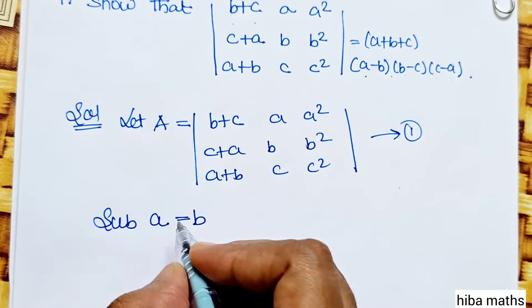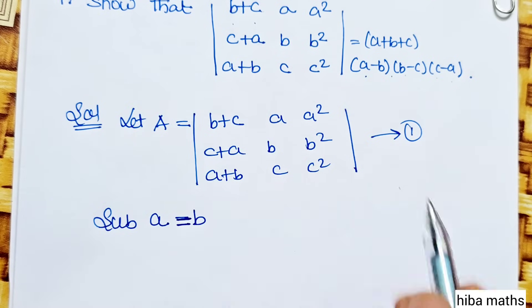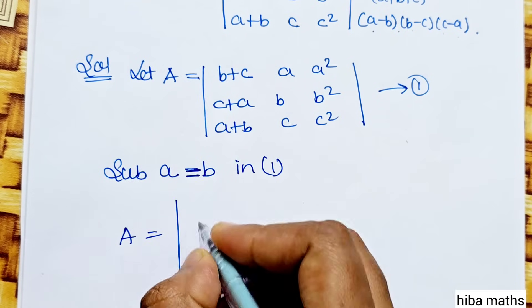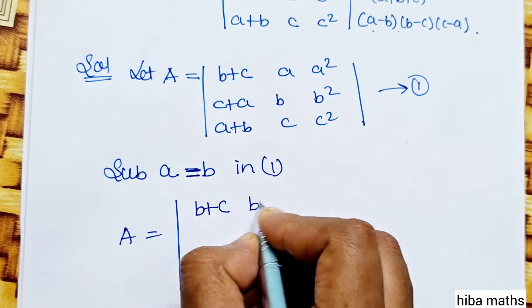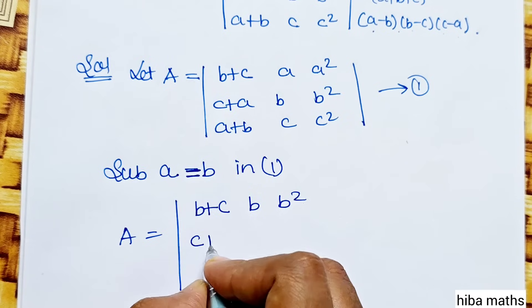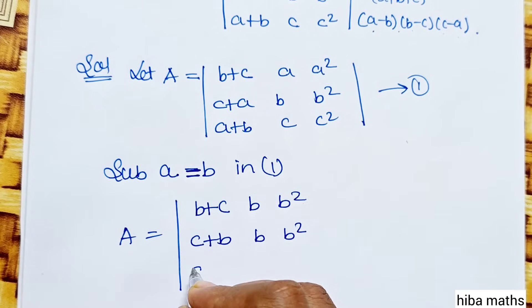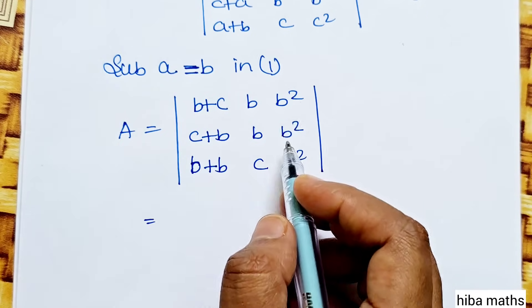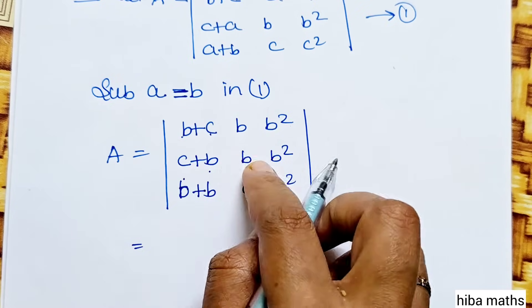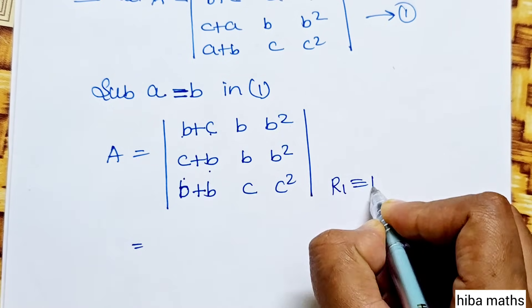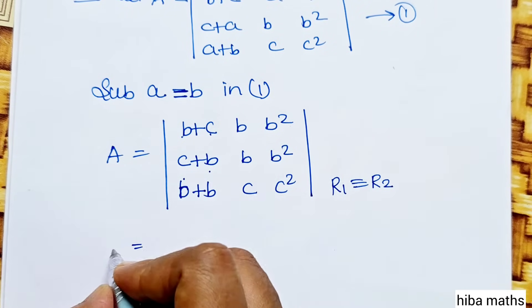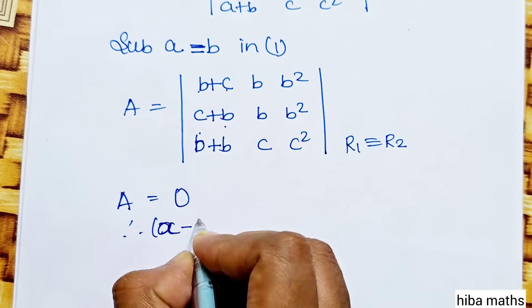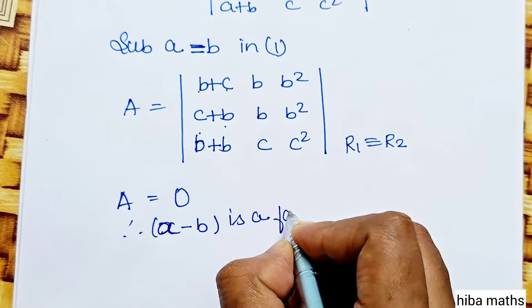Let A equal that determinant. To show a minus b is a factor, substitute a equal to b. The matrix becomes: b plus c, b, b squared; b plus c, b, b squared; b plus b, c, c squared. So R1 is identical to R2, the determinant value is 0, and therefore a minus b is a factor.